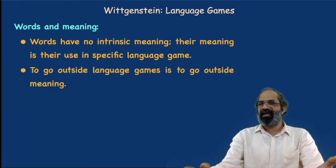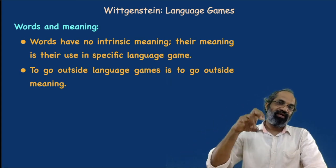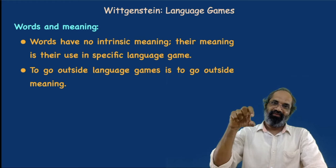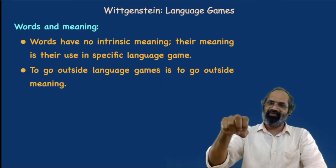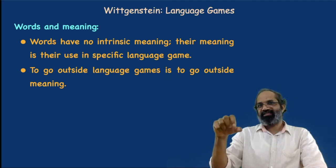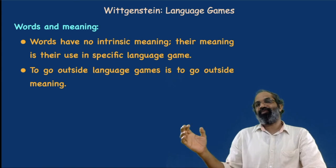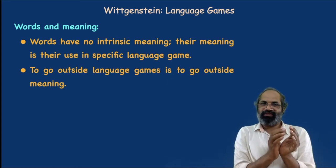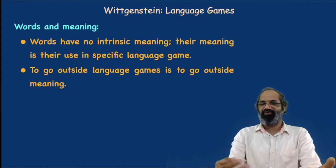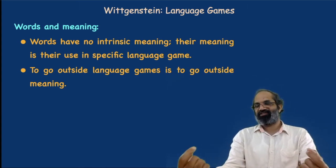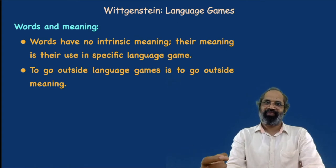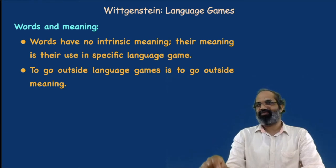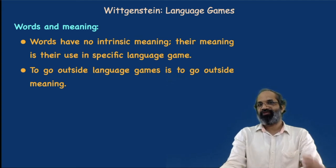To go outside a language game is to go outside meaning. If you take a word out of its context — out of its use in a specific language game — and ask for its meaning, that amounts to going outside meaning. No word can have a meaning outside of its use. That is what philosophers like Socrates have done: asking what does virtue mean, what does goodness mean, what does beauty mean, what is justice? Such words, and indeed any word, can have their specific meaning only in their specific contextual use.